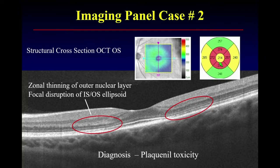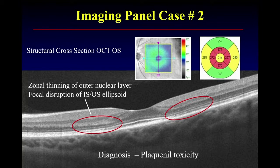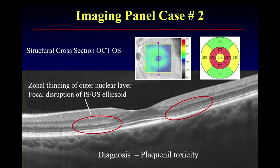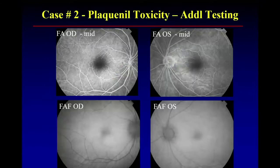Our eye may not pick it up right away, but if the maps are correct, you can see this perifoveal thinning. That is characteristic of Plaquenil. For those of you in the audience who take a history, you would have known this patient was on Plaquenil, but I did not give you that history — but she was.